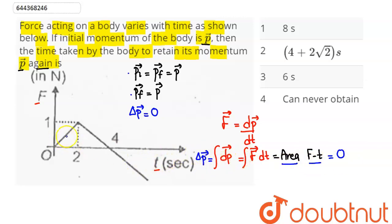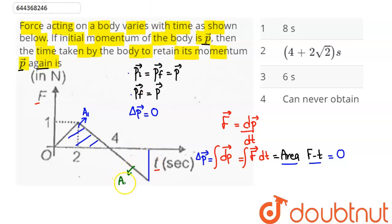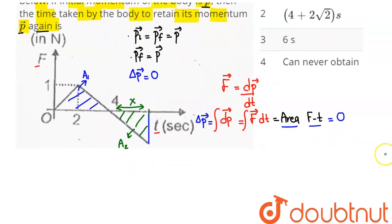The area in the first quadrant is positive. To make the total area zero, the magnitude of the area in the first quadrant (A1) must equal the magnitude of the area in the fourth quadrant (A2). These two areas A1 and A2 are of the same magnitude but opposite sign, so they add up to zero. Let the unknown distance be x.